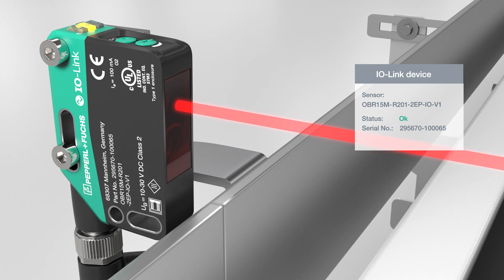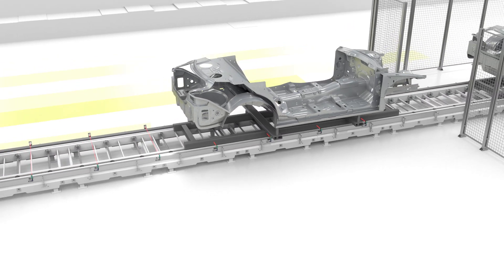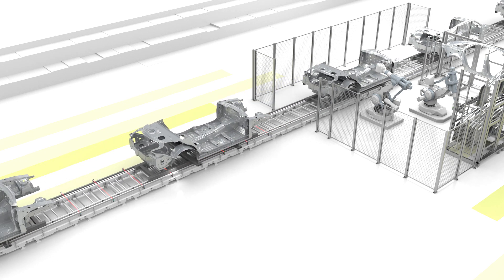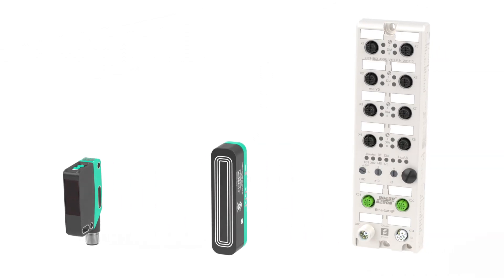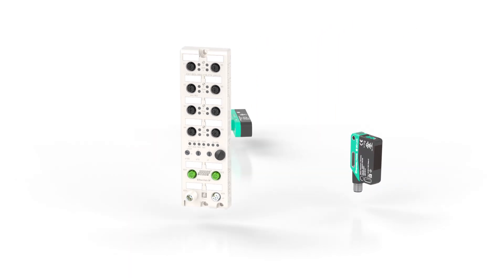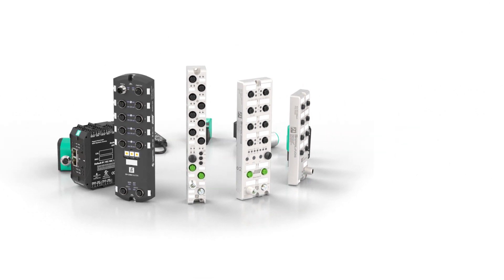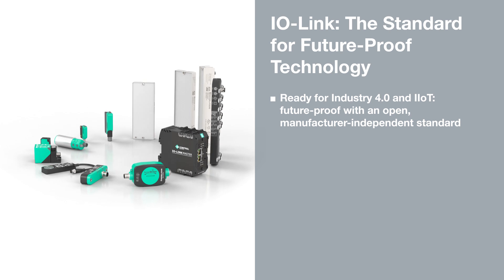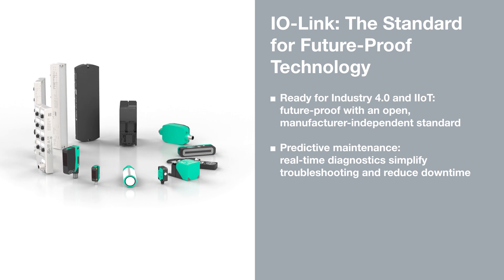Quick, targeted maintenance of devices significantly reduces plant downtime. The data storage and localization functions are just two of the smart features that IO-Link uses to increase the efficiency of your plant. PEPPERL+FUCHS's comprehensive portfolio of IO-Link devices and the corresponding infrastructure is constantly expanding and always offers the perfect solution for your application.